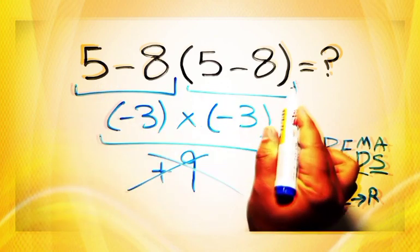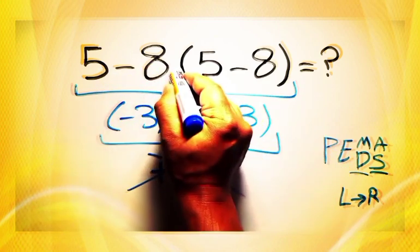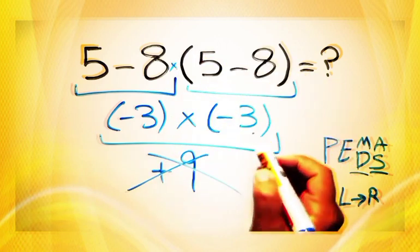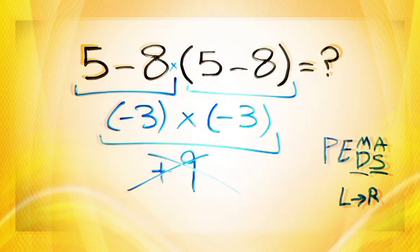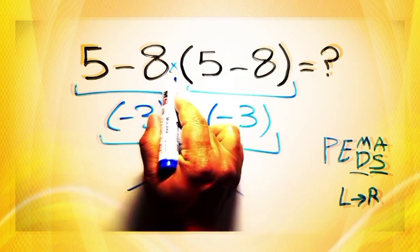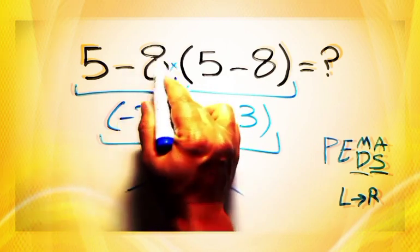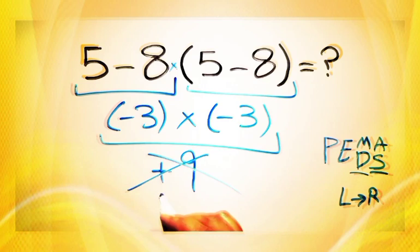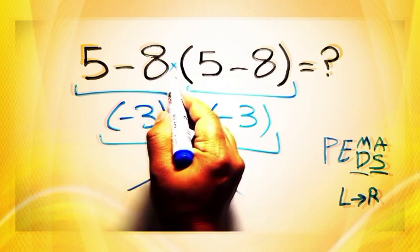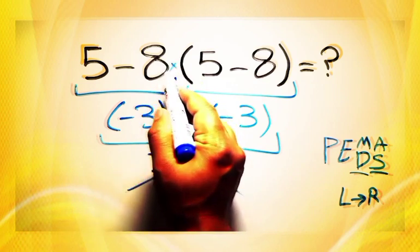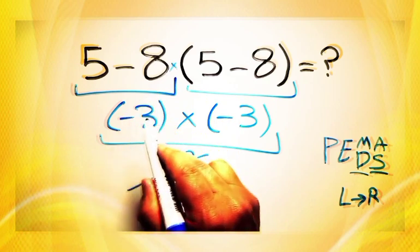Here in this expression we have one subtraction, one multiplication, and one parentheses. Inside this parentheses we have one subtraction. Here we have a multiplication because in mathematics when a number is placed next to parentheses, it means multiplication. And we usually don't write the multiplication sign for brevity.